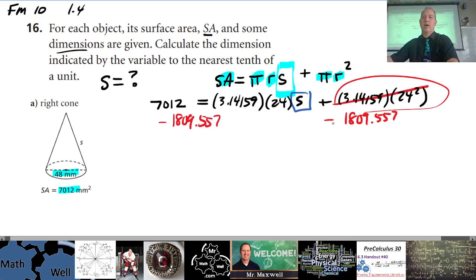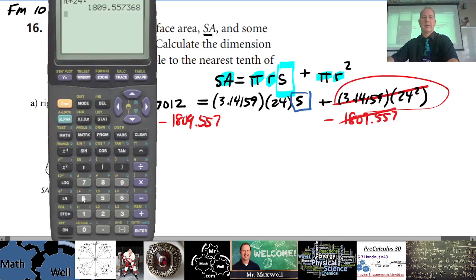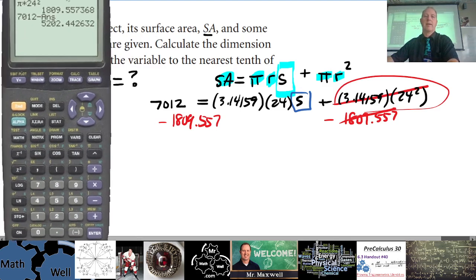will cancel off with this plus and minus, that's gone. So what is 7012 minus, use your answer button so you don't have to retype all those decimals, that's pretty smart to do that. So 5202.44263.